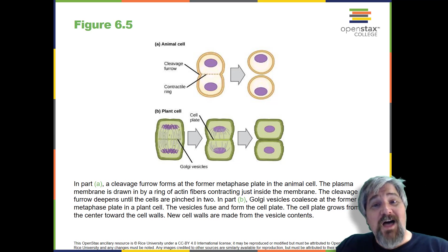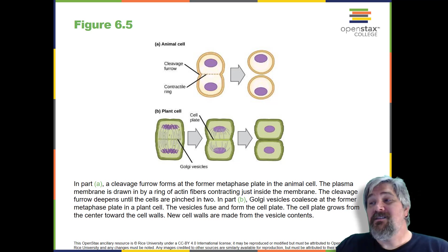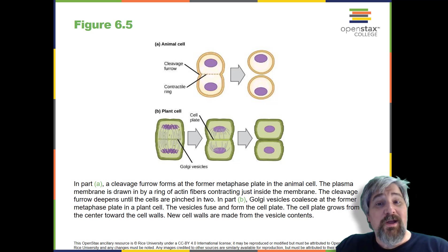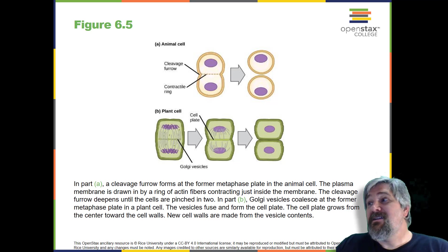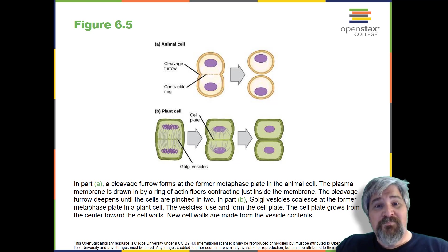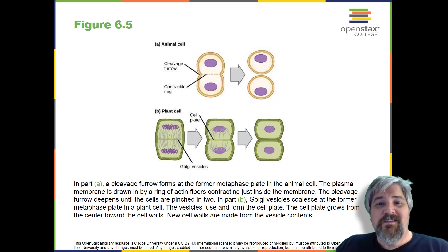In plant cells, a cleavage furrow is not possible because of the rigid cell walls surrounding the plasma membrane. A new cell wall must form between the daughter cells. During interphase, the Golgi apparatus accumulates enzymes, structural proteins, and glucose molecules prior to breaking up into vesicles and dispersing throughout the dividing cell. During telophase, these Golgi vesicles move on microtubules to collect at the metaphase plate, where the vesicles fuse from the center towards the cell walls. This structure is called a cell plate. As more vesicles fuse, the cell plate enlarges until it merges with the cell wall at the periphery of the cell. Enzymes use the glucose that has accumulated between the membrane layers to build a new cell wall of cellulose. The Golgi membranes become the plasma membrane on either side of the new cell wall.